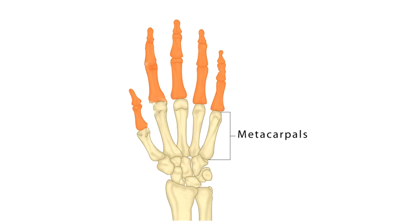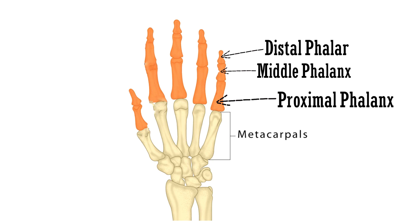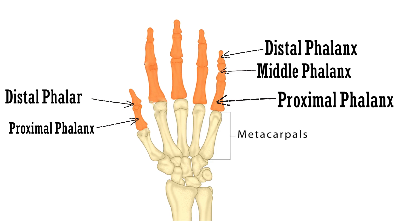Let's have a look. As you can see, the bones shaded in orange are the phalanges. This is the proximal phalanx, this is the middle phalanx, and this is the distal phalanx. For the thumb, as you can see, there are only 2 phalanges — proximal and distal. Between these phalanges, there are interphalangeal joints.